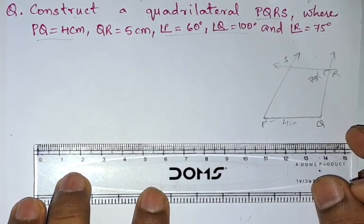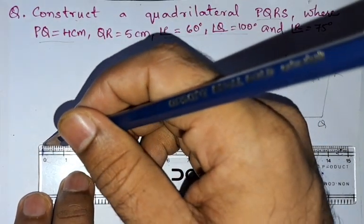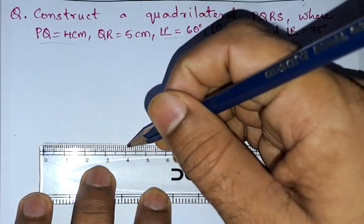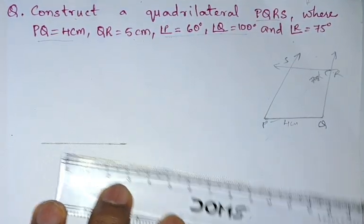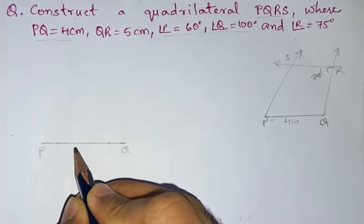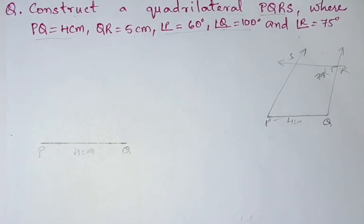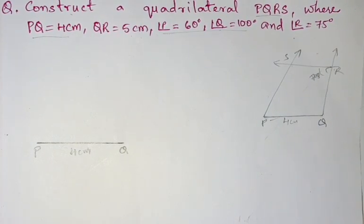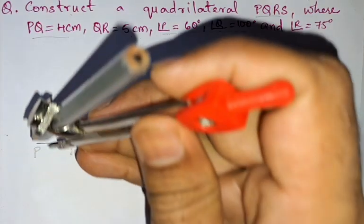PQ is 4 centimeters. Next from P, 60 degrees. So take the compass with any radius and draw a semicircle from P.